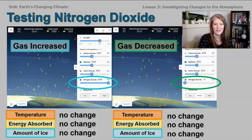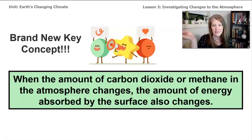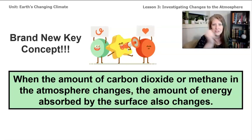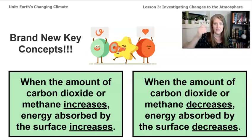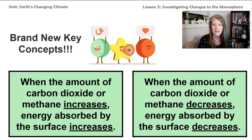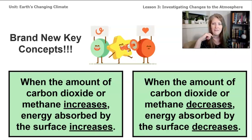This data is all so interesting — we've learned a lot in this lesson. We've discovered a brand new key concept: when the amount of carbon dioxide or methane in the atmosphere changes, the amount of energy absorbed by the surface also changes. Specifically, when you increase carbon dioxide or methane gas, the energy absorbed and the temperature also increase. And when the amount of carbon dioxide or methane decreases, the amount of energy absorbed on the surface also goes down.